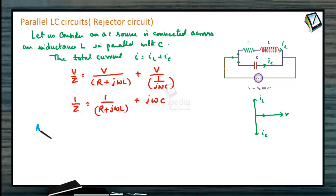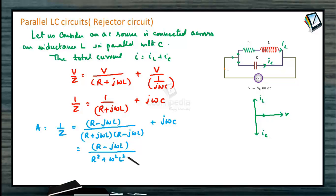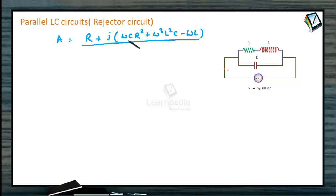Admittance A equals 1 by Z. It can be written as (R minus j·omega·L), multiplying and dividing by the conjugate, divided by (R plus j·omega·L)(R minus j·omega·L), plus j·omega·C. This factor becomes (R minus j·omega·L) divided by (R squared plus omega squared L squared), plus j·omega·C.